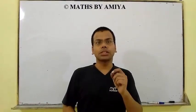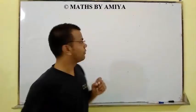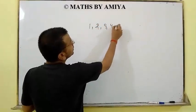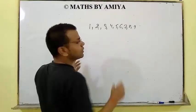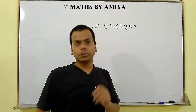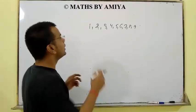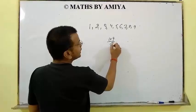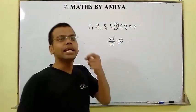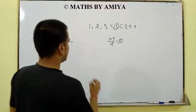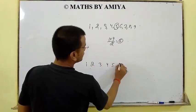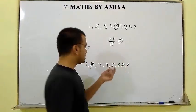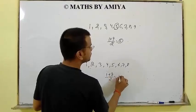Before solving this question, first learn a few concepts. Concept number 1: when we have the first n natural numbers — say 1, 2, 3, 4, 5, 6, 7, 8, 9 — the average of these first 9 natural numbers is (first term + last term) / 2. If we have the first 8 natural numbers — 1, 2, 3, 4, 5, 6, 7, 8 — the average is (1 + 8) / 2 = 4.5.